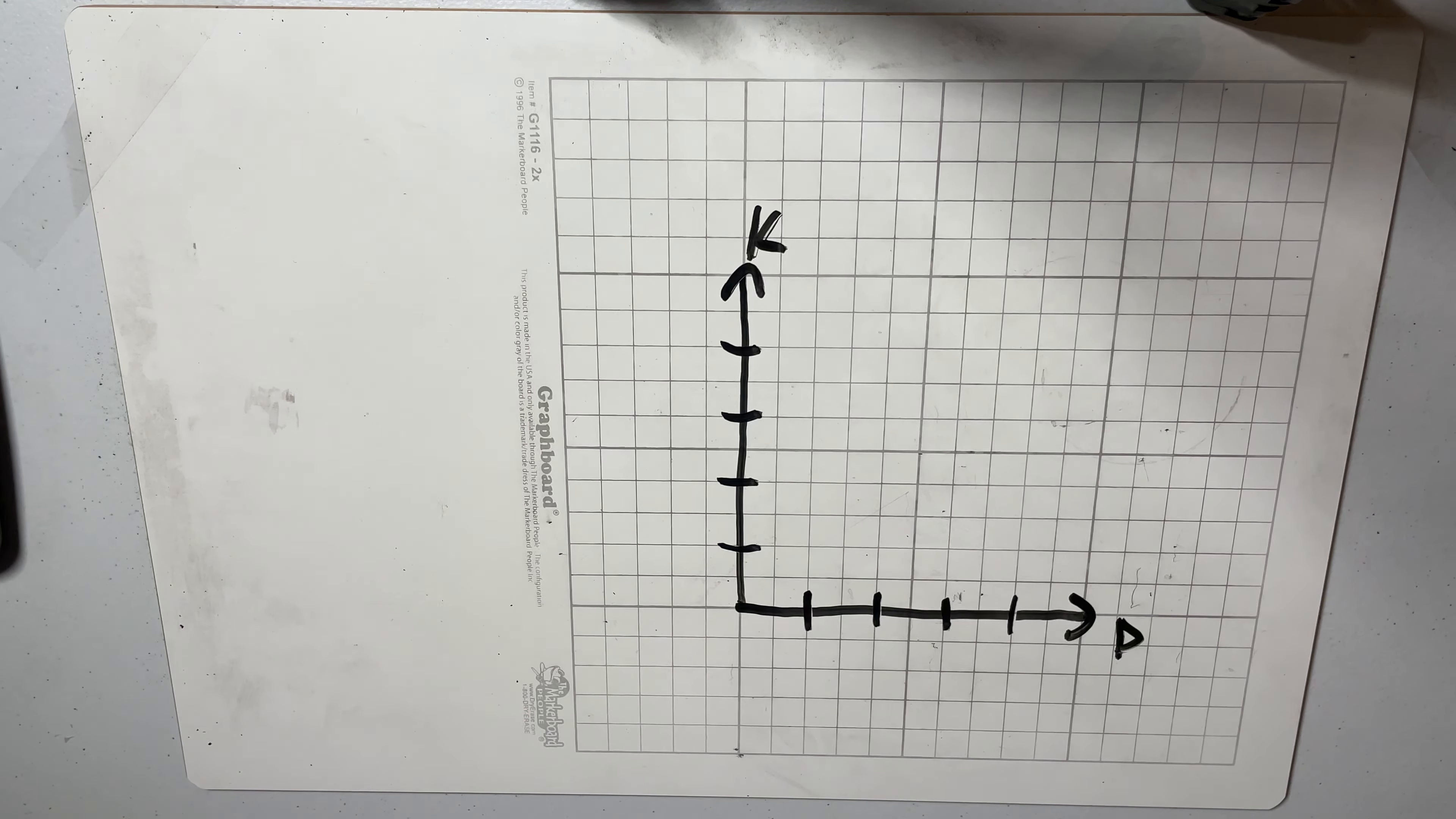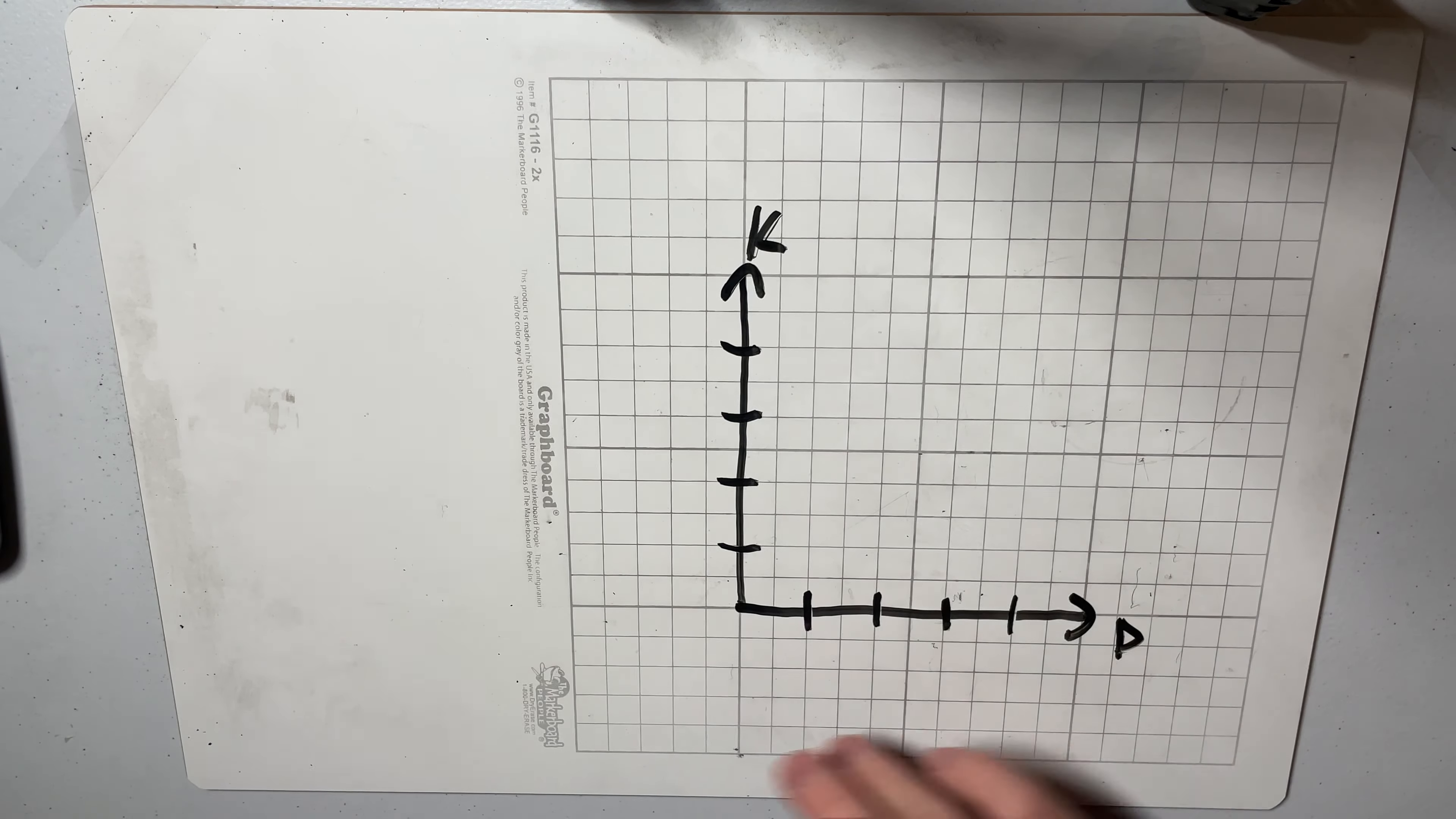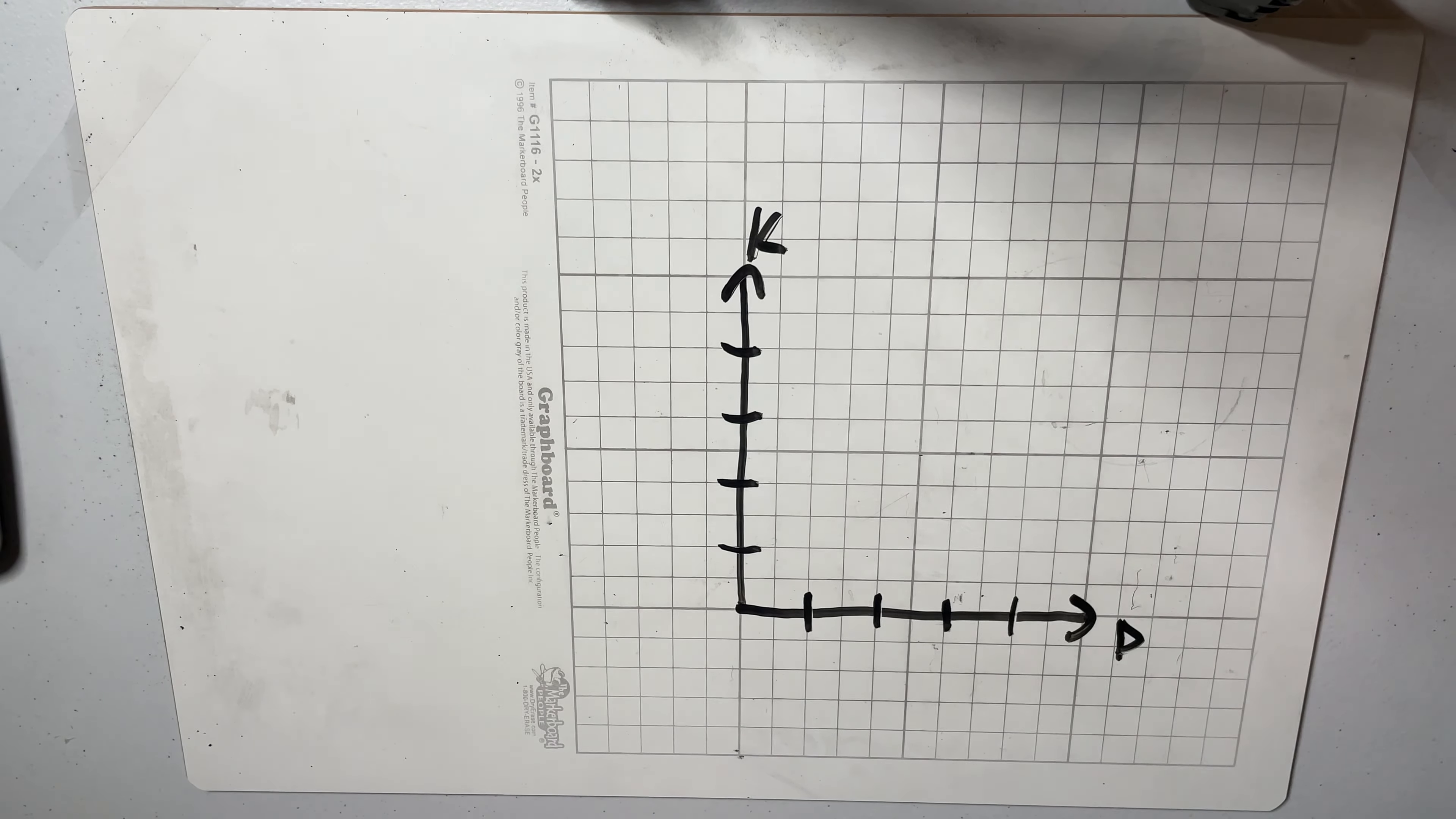So I drew a 2D plane here where the x-axis represents the number of d's and the y-axis represents the number of k's. So you might see where I'm trying to go with this.